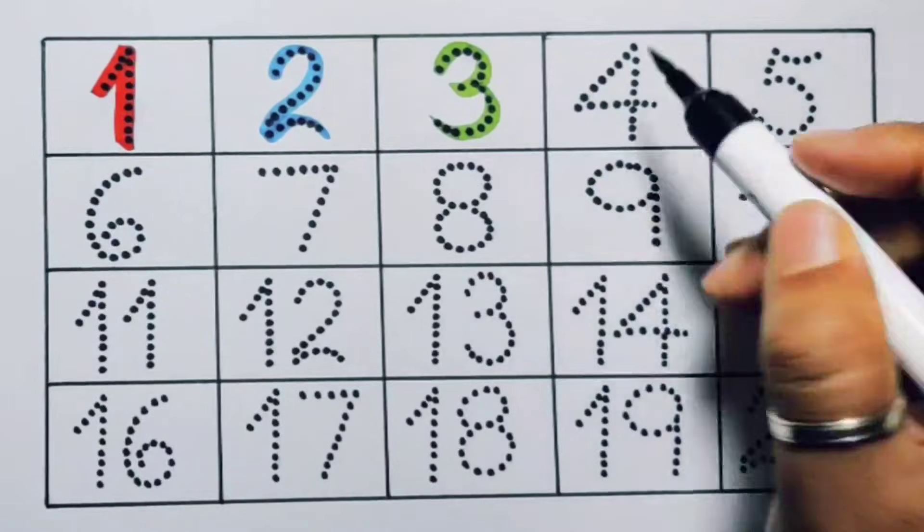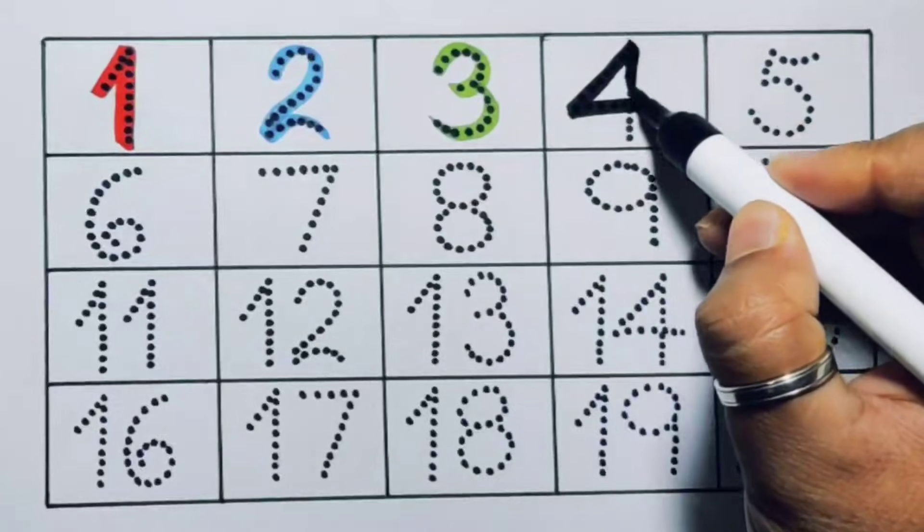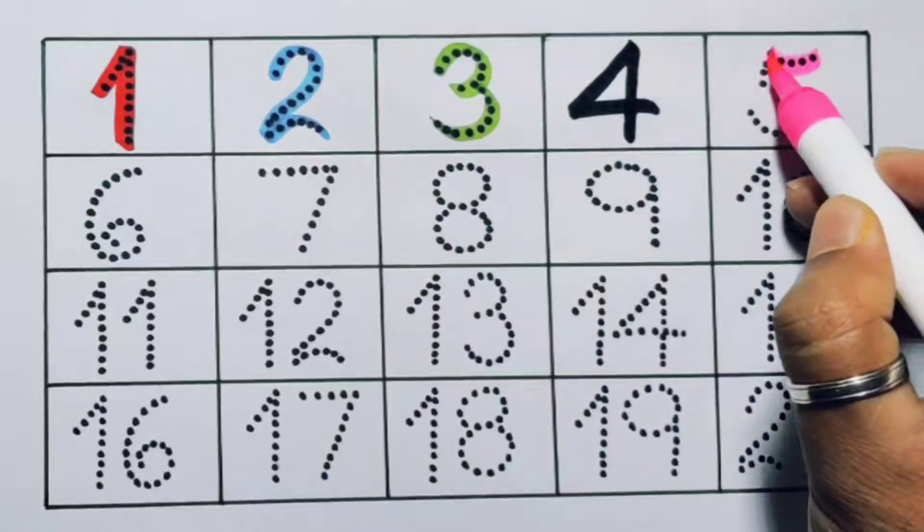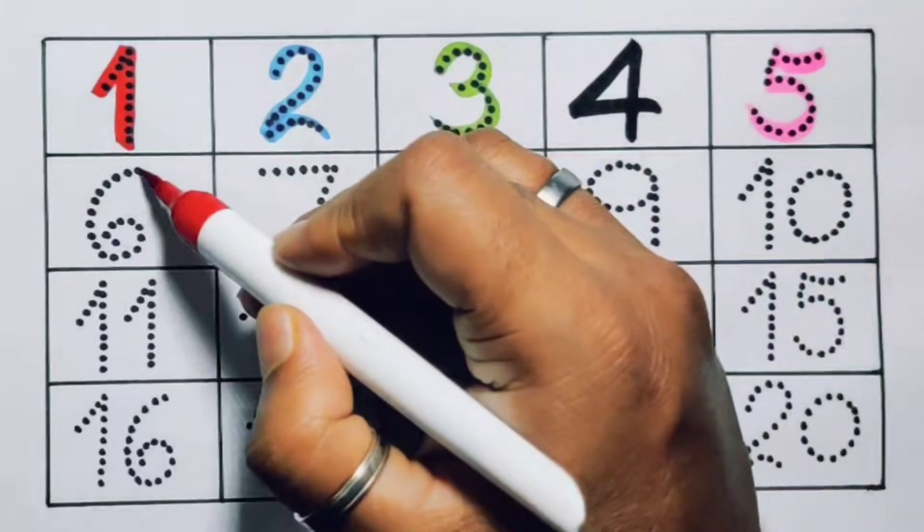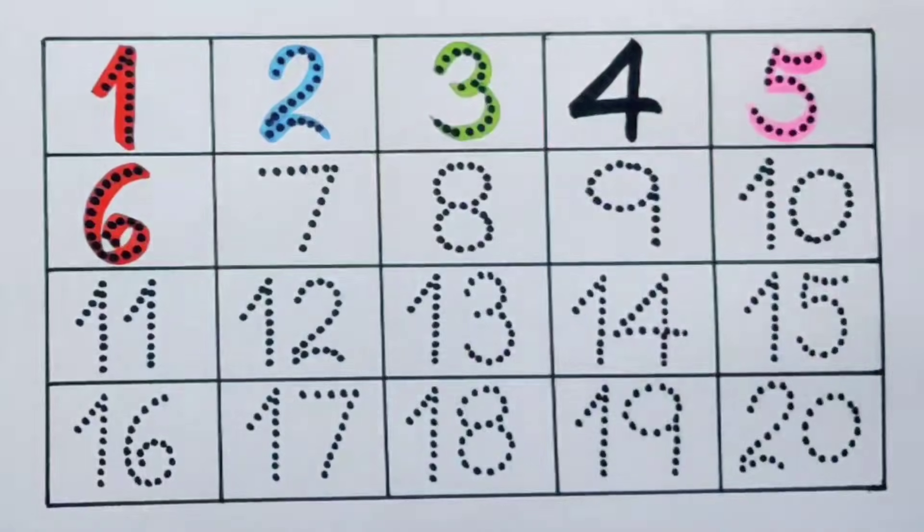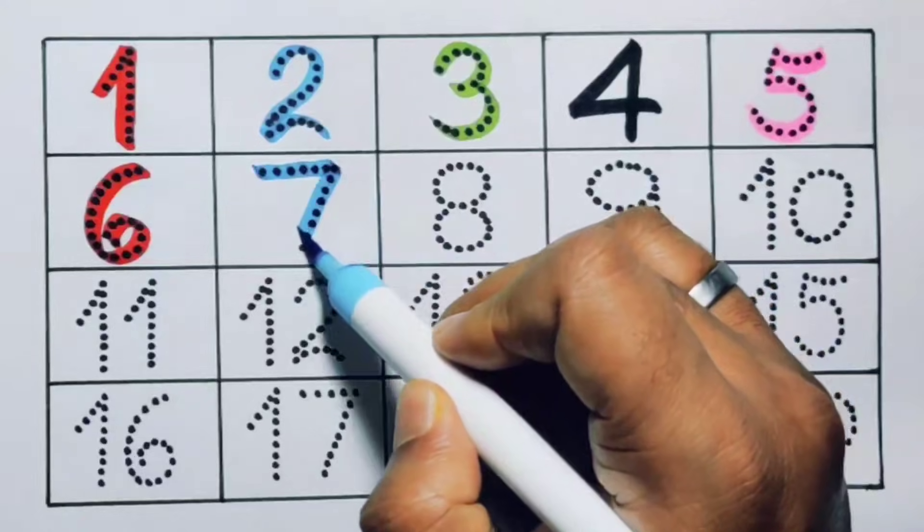Next kids, four, number four. Next, five, number five. Next kids, six, number six. Next kids, seven, number seven.